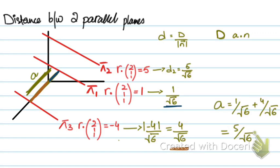So, that's how you calculate the distance between two parallel planes. If I needed this distance, I would have added all three. 5 over root 6 plus 1 over root 6 plus 4 over root 6, and that would have been my answer.